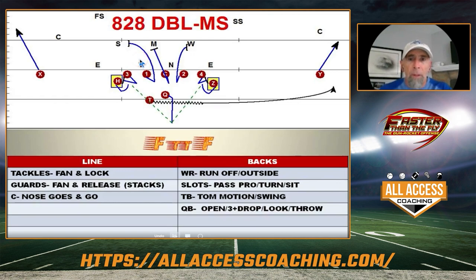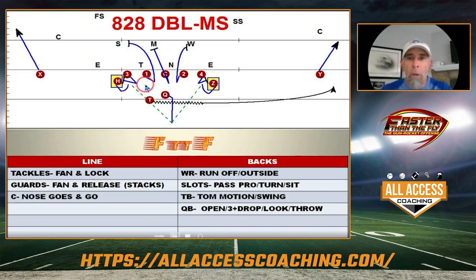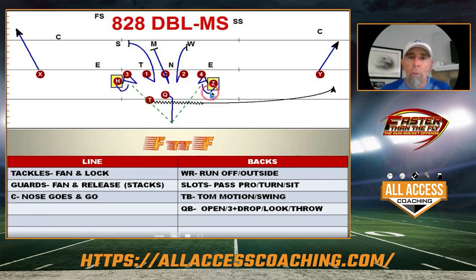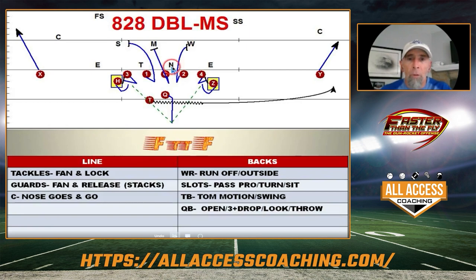The next screen is the double screen, which has really developed the last couple years. We're going to have our tailback run rocket motion to one side — typically the field side — and do the exact same footwork as the middle screen, but now from both sides. This gives our quarterback a two-way go, so instead of one target he's got two. The blocking up front is exactly the same: tackle fans and locks on the defensive end or outside linebacker, guards fan and release looking for stacks, and the center lets the nose go the direction he wants and then goes for the Mike.